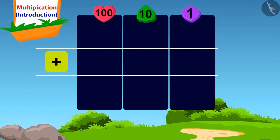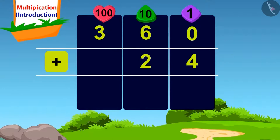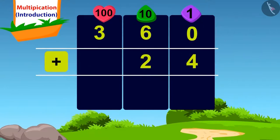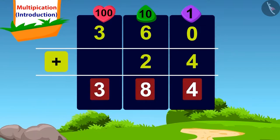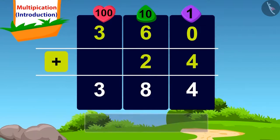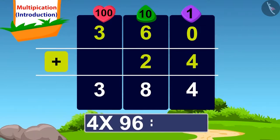We will write this answer here. Now it is very easy. If we add 24 to 360, what do we get? 384. Doing this, we got the answer to our question: 4 times 96 is 384.